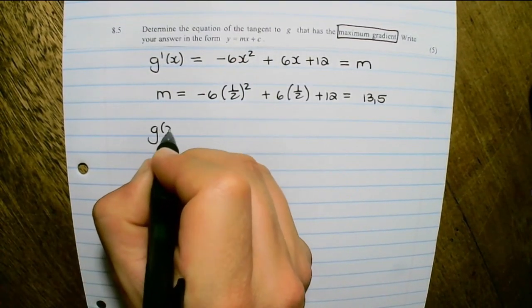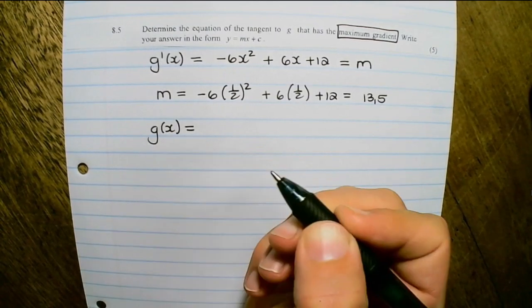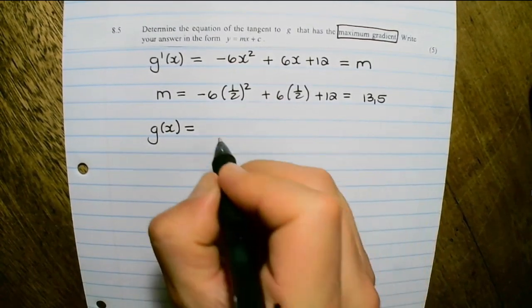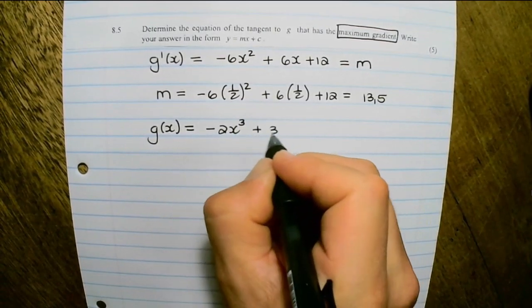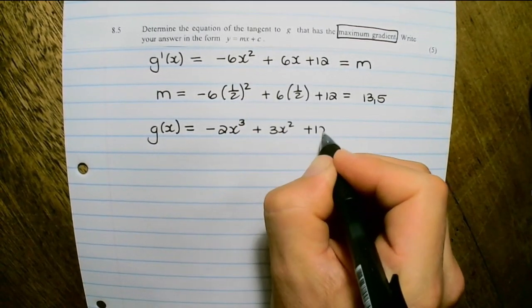So in our previous question, we found the equation of g(x), which was negative 2x cubed plus 3x squared plus 12x.